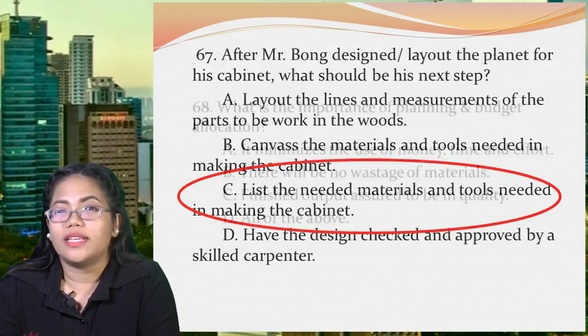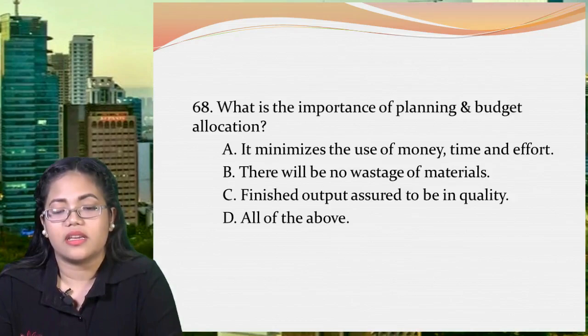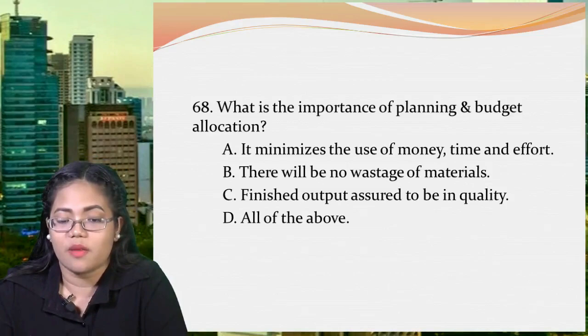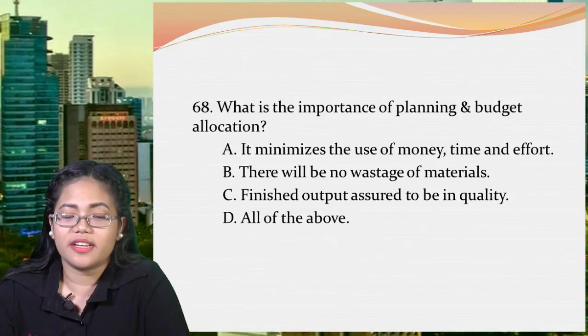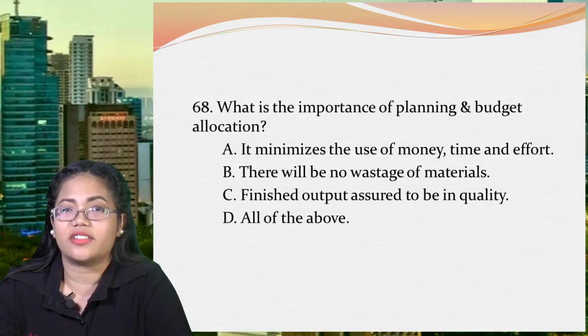Next question: what is the importance of planning and budget allocation? A: it minimizes the use of money, time, and effort. B: there will be no wastage of materials. C: finished output is assured to be of quality. Or D: all of the above. Letter A means you save through proper budgeting; letter B means nothing goes to waste; letter C means you produce a quality product. All choices are advantages of planning and budget allocation, so the answer is letter D, all of the above.